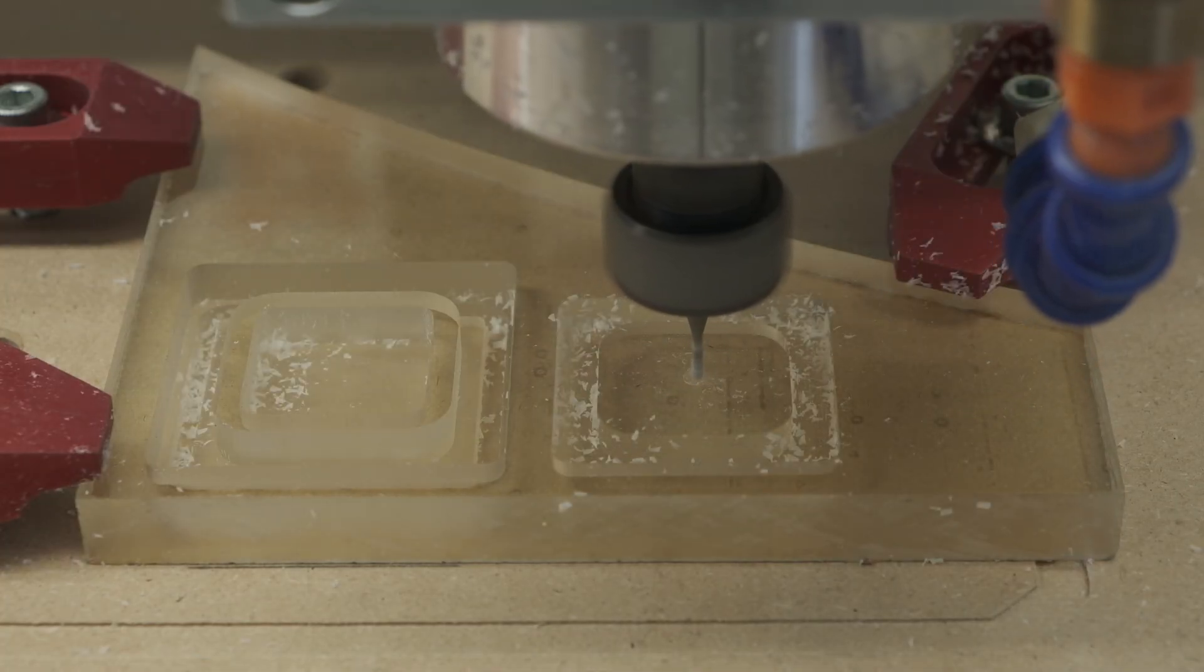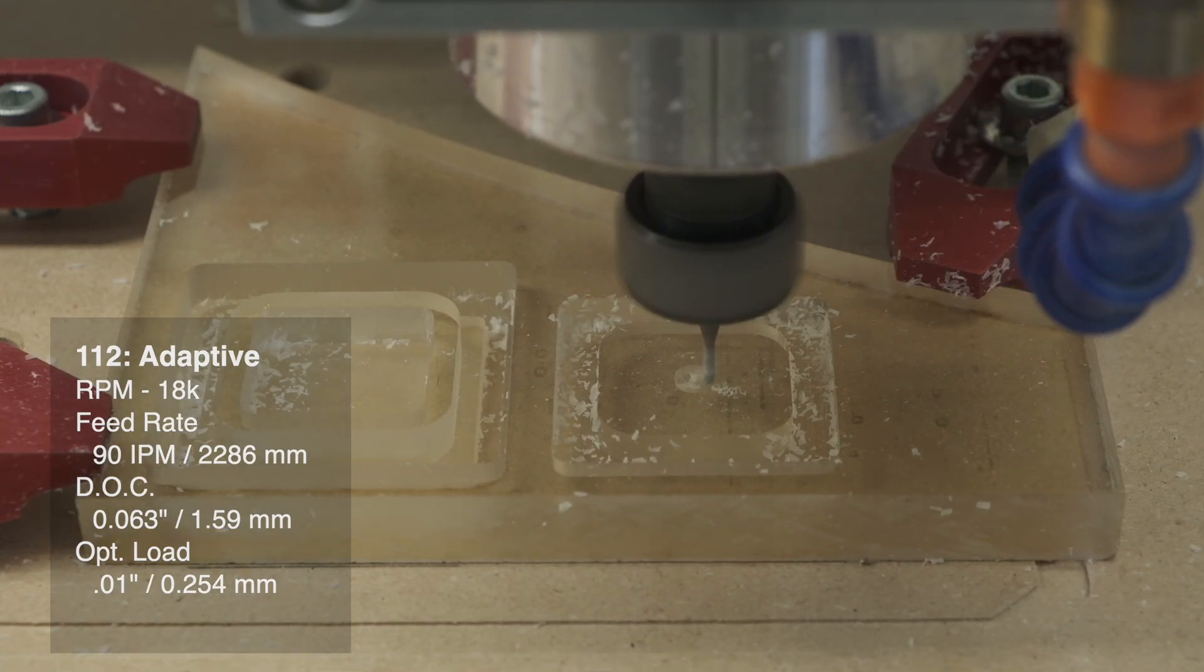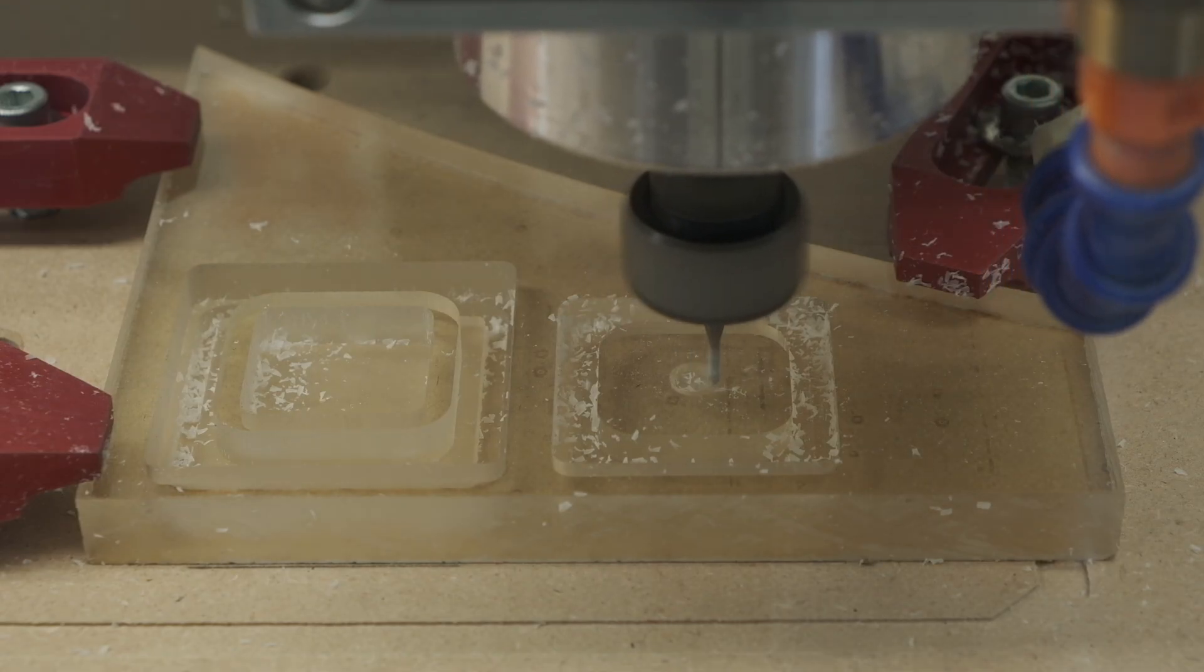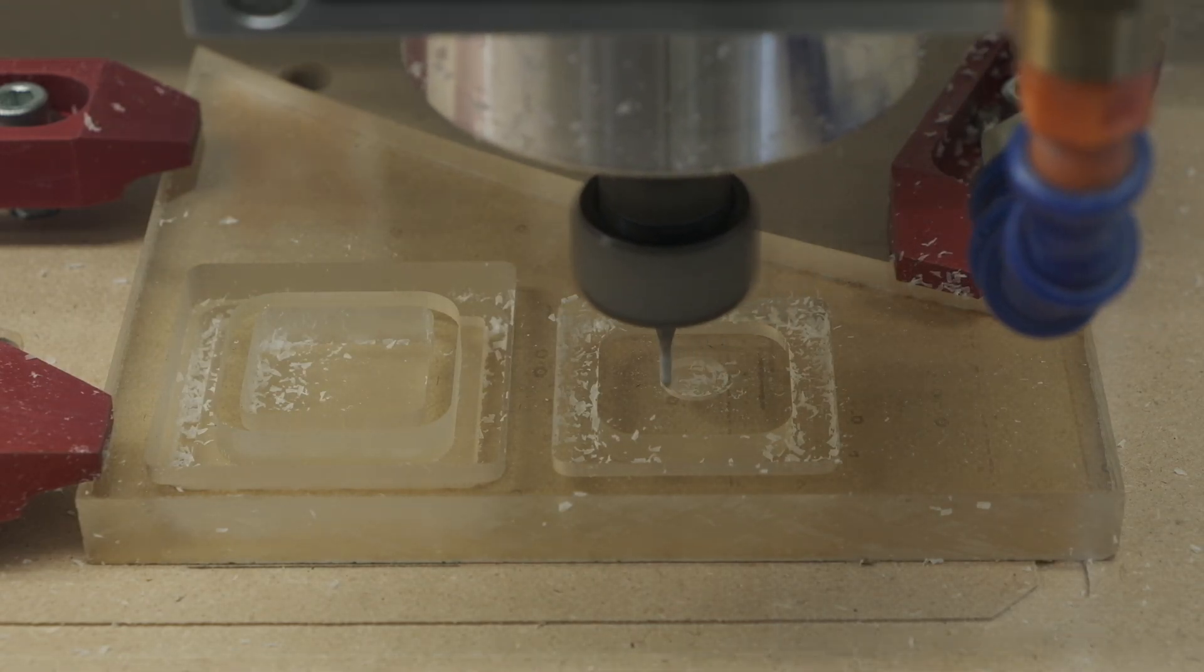For an adaptive toolpath, and this is a conservative set of parameters, I'd start at 18,000 RPM, 90 inches per minute, a sixteenth-inch depth of cut, and a 0.01 inch optimal load. There is a ton of room to improve on this recipe, but as I've been told many times in college, finding the limits is an exercise left to you.